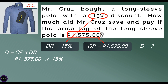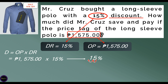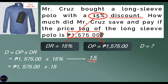Again, convert percent to decimal number by moving the decimal point two places to the left and removing the percent symbol. So 15% is equal to 0.15. Now we multiply the original price of 1,575 pesos times 0.15.